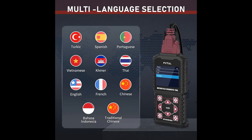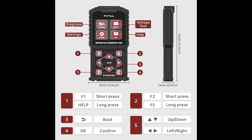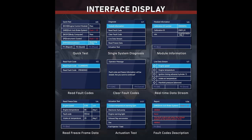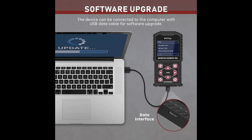Easy to Use: FSTOL M3 is a handheld motorcycle diagnostic tool for mainstream motorcycle brands and can help technicians diagnose problems faster and make repairs. This tool has functions such as voltage detection, multi-language selection, and unit switching. It has a clear interface and is easy to operate. It is a good helper for motorcycle maintenance.